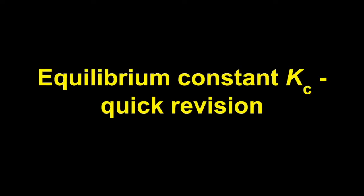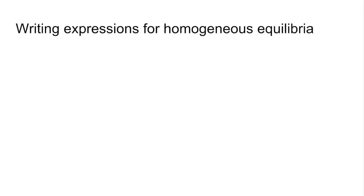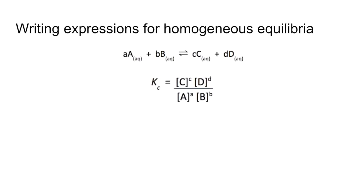This is a quick revision video on the equilibrium constant Kc. The first thing we'll look at is how to write expressions for homogeneous equilibria — equilibria where everything is aqueous, so everything is in the same physical state. Kc equals the equilibrium concentrations of the products raised to the power that balances the equation, divided by the equilibrium concentrations of the reactants. The little c in Kc represents concentrations, and square brackets are used for those.